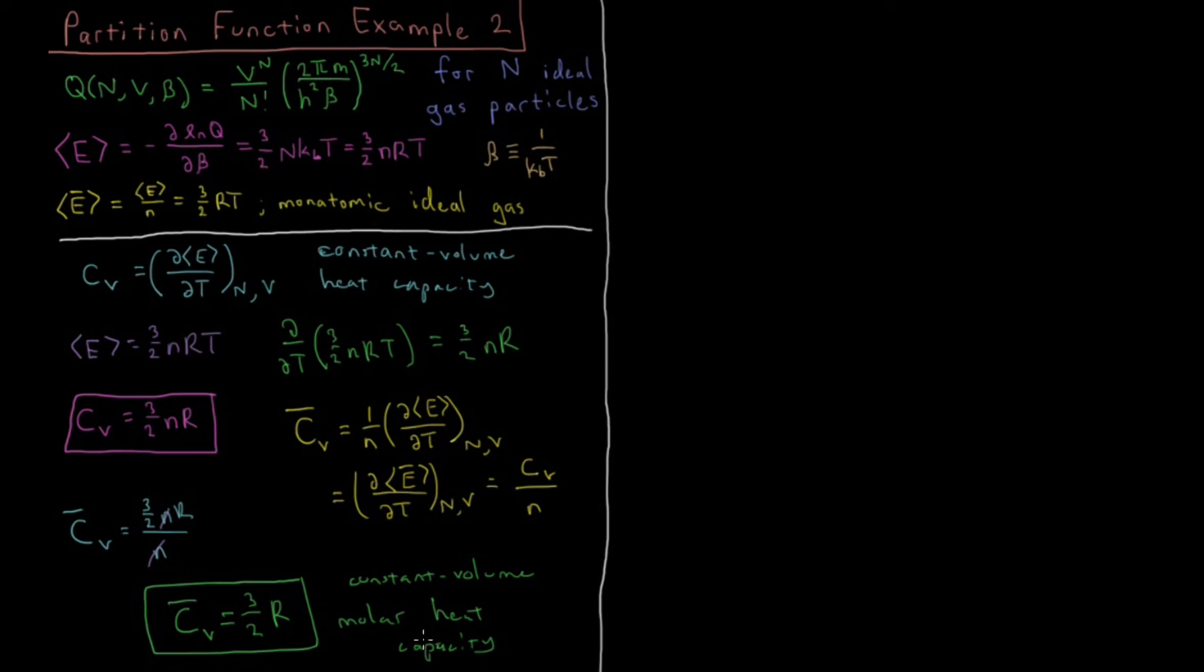So if you take a collection of monatomic ideal gas particles contained in some vessel, and then you add in some energy to that system in the form of heat, then per every mole of particles in there, you'll measure this heat capacity here, which is just 3 halves times the gas constant. So the gas constant is shown again to be a rather fundamental part of these types of relationships here.